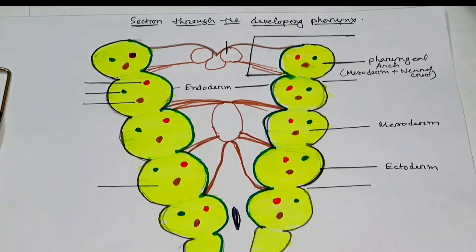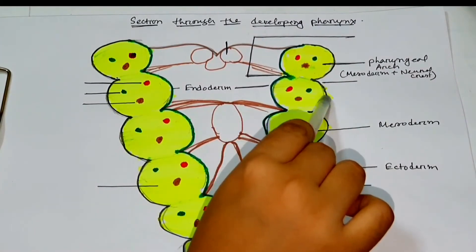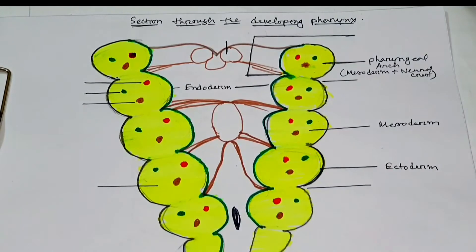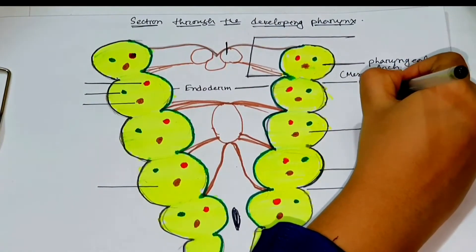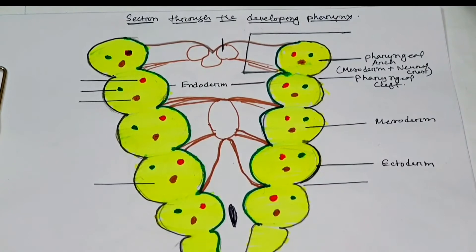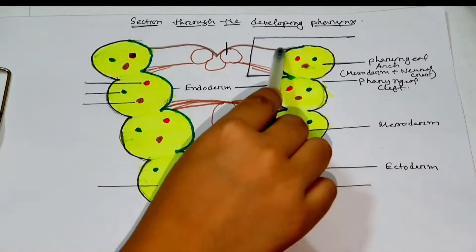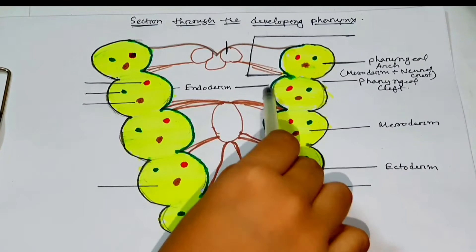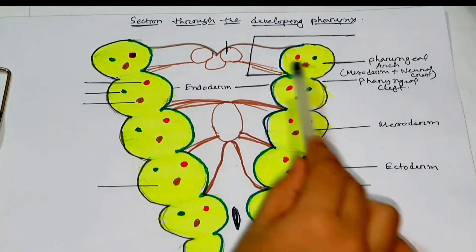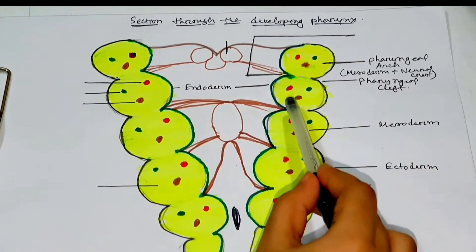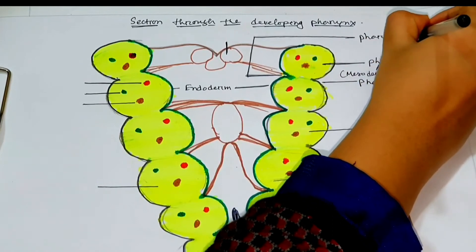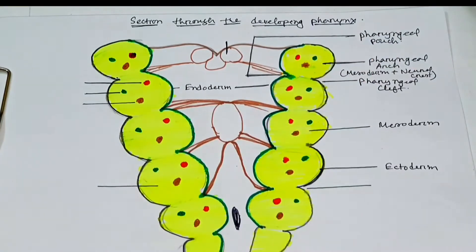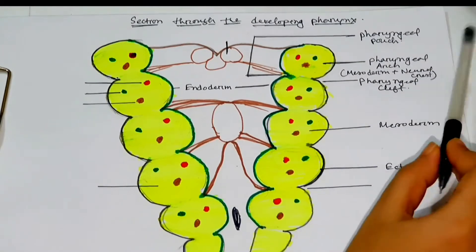The outer ectodermal lining forms some grooves — these grooves are called pharyngeal clefts. The endodermal lining forms some pouches inside — these pouches are called pharyngeal pouches, formed by the endodermal lining.